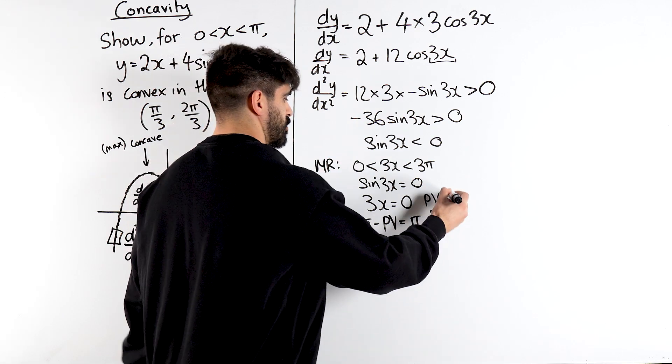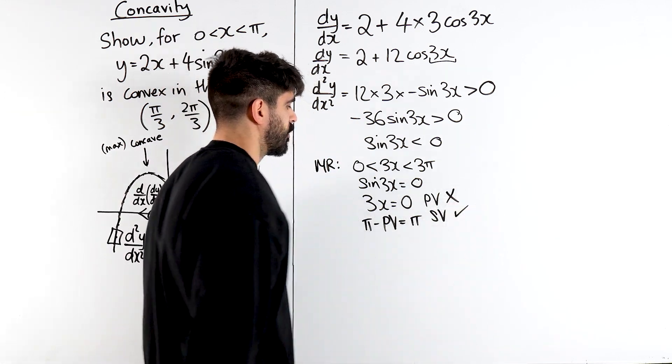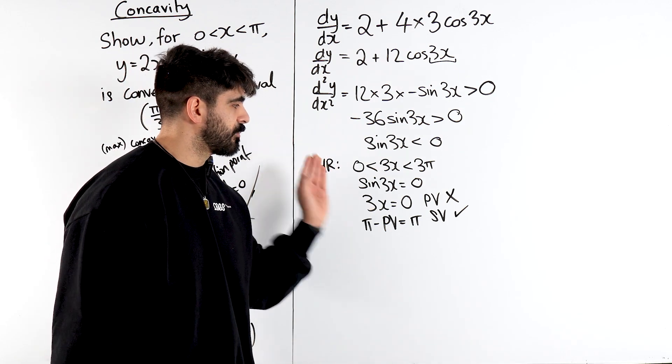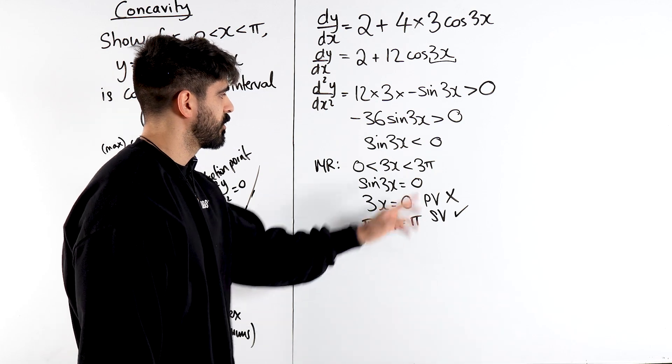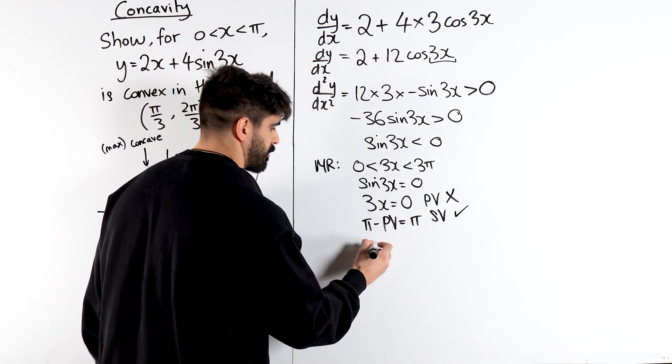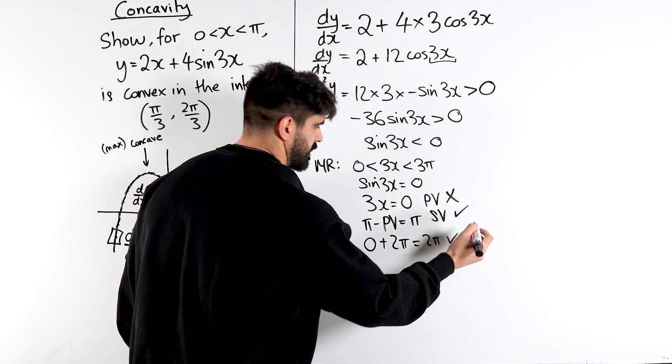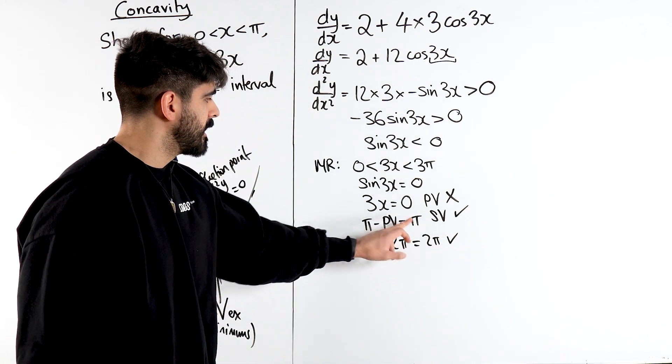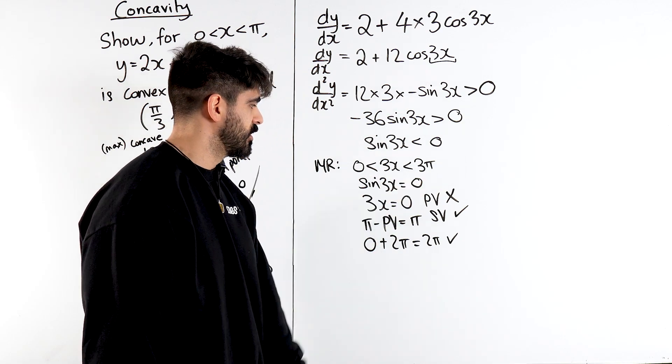Now 0 is not in the range. π is in the range. Not to worry. Once you have your primary and secondary value add or minus 2π to get other values in the range. We're going up to 3π. So I'm going to take my primary, I'm going to add 2π, which is 2π, which is in the range. Now if we do π + 2π, we're going to get 3π, which is not in the range.